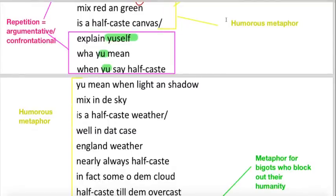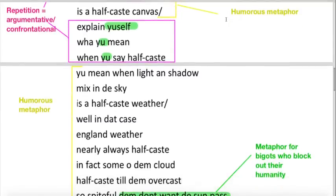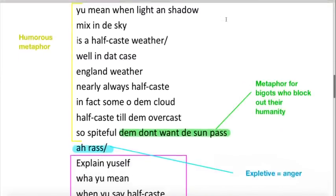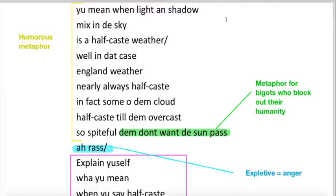Explain yourself what you mean when you say Half-Caste. You mean when light and shadow mix in the sky is a Half-Caste weather? Well, in that case, England weather nearly always Half-Caste. In fact, some of them cloud Half-Caste till them overcast, so spiteful, them don't want the sun pass.